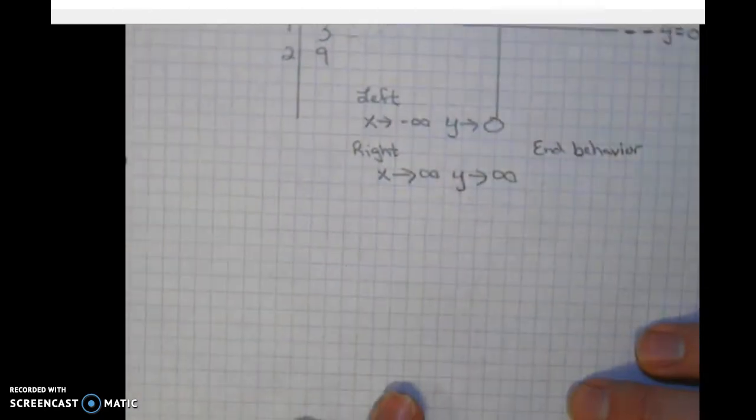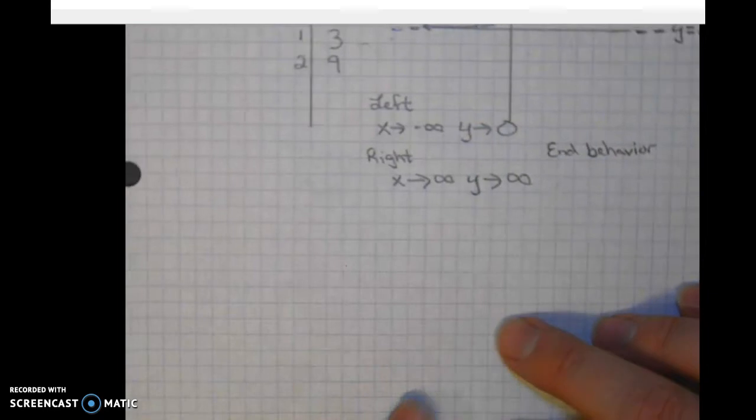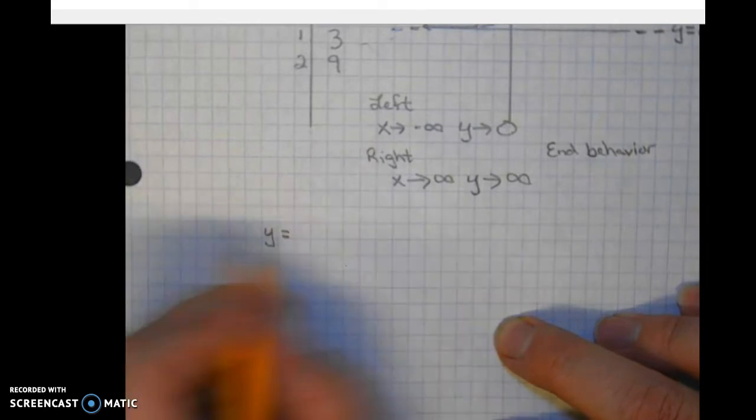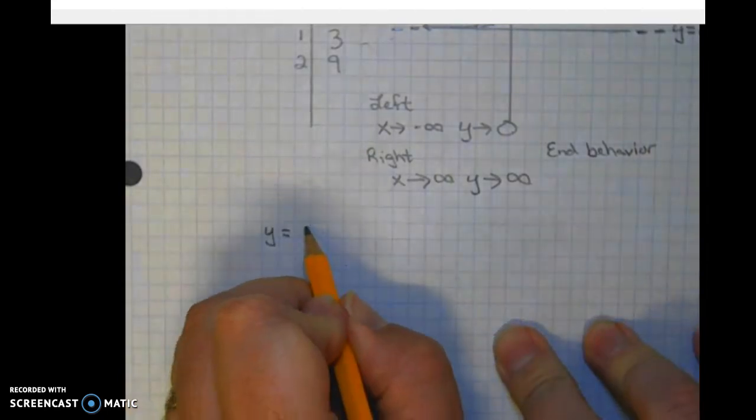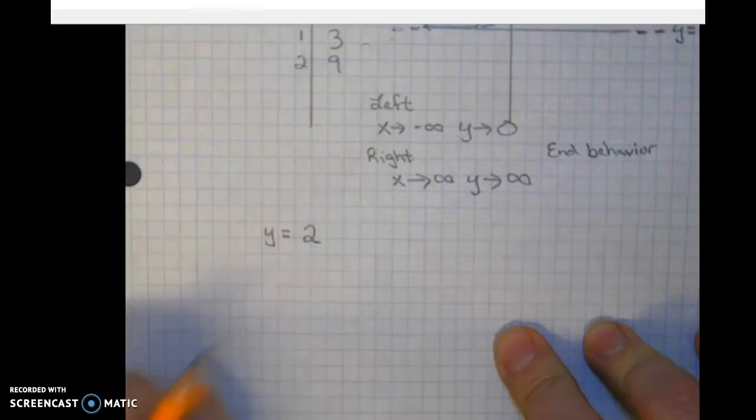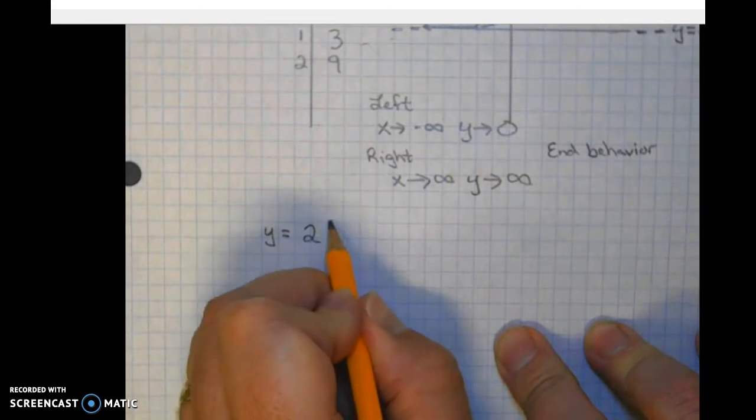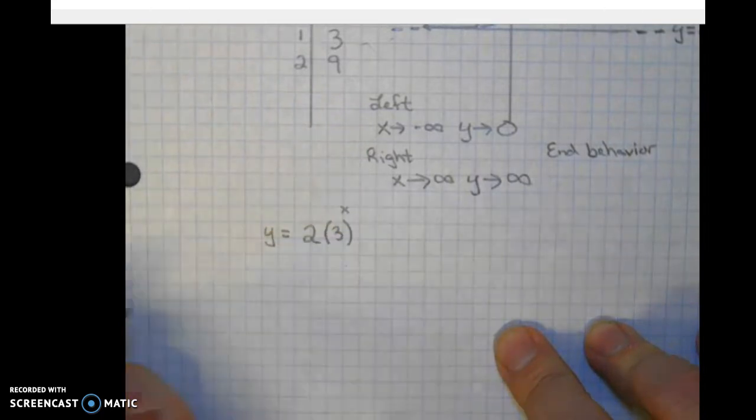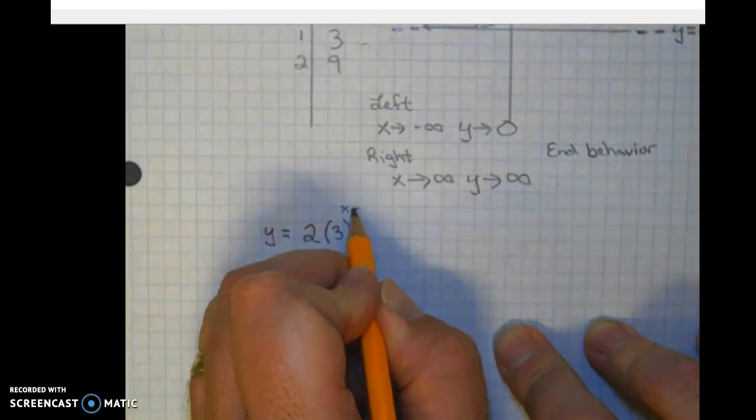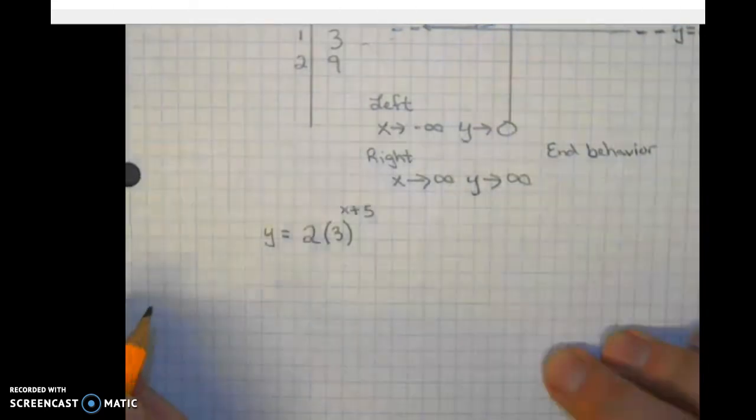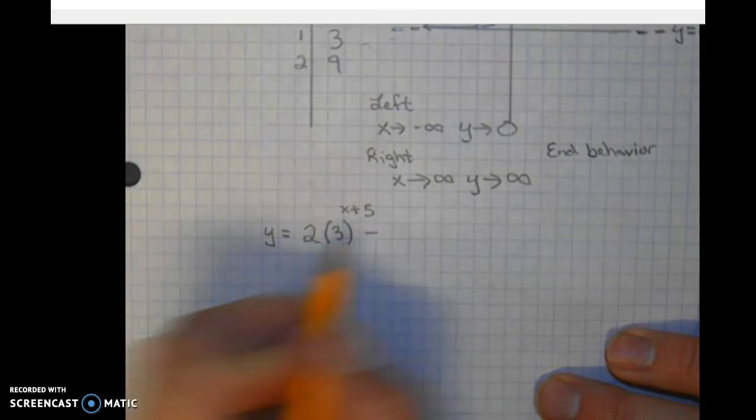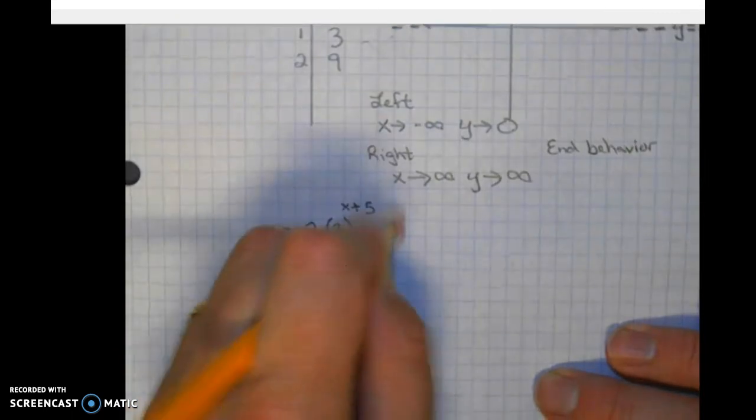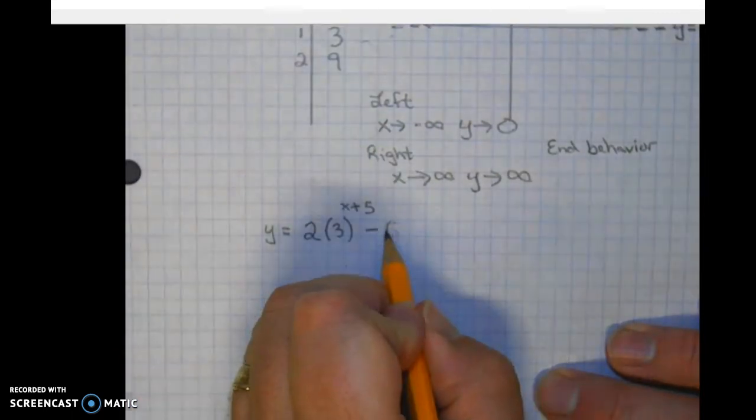Now let's go ahead and take a look at a transformation of this parent. So let's take this parent. Let's give it a vertical stretch. We'll keep the base the same. We'll do a horizontal translation to the left, say five units. And we'll try to translate it down five units. And I don't like those numbers being the same. Let's translate it down six units.